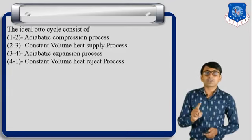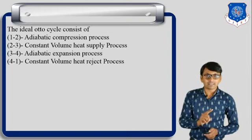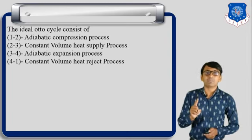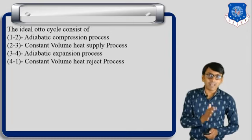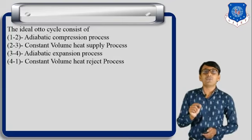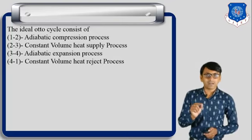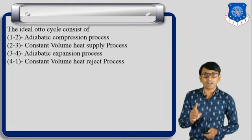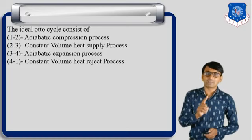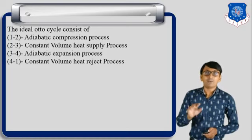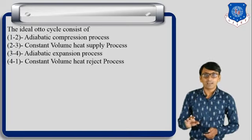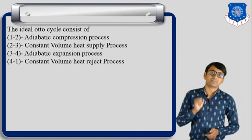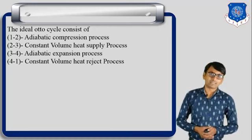Process 3-4 is the adiabatic expansion process. During this process there is no heat transfer and volume of air increases. Process 4-1 is the constant volume heat rejection process. During this process volume remains constant and heat is rejected from the air. So these are the four processes of the Otto cycle.